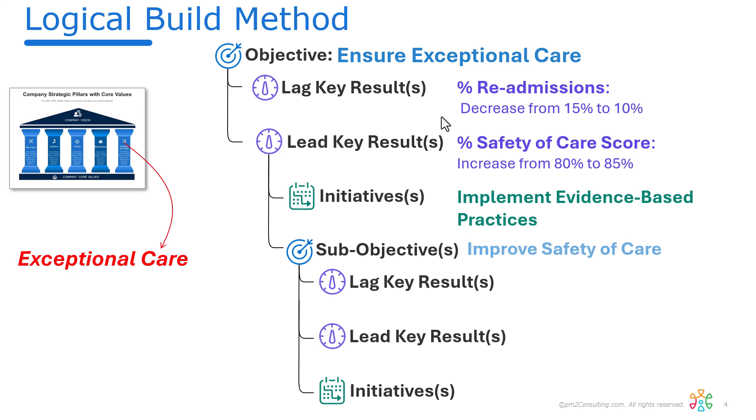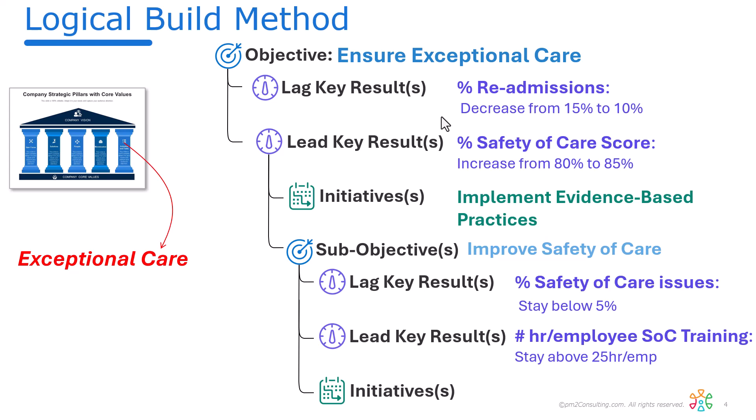For this example, let's also have a sub-objective: improve safety of care. The lagging key result is percentage of safety of care issues, with a target to stay below 5%. The leading key result is number of hours of employee training, and we want to stay above 25 hours per employee. The initiative here might be to develop safety standard operating procedures. This illustrates the lagging-leading framework and how we build it out with initiatives and sub-objectives to achieve the overall objective: ensure exceptional care.